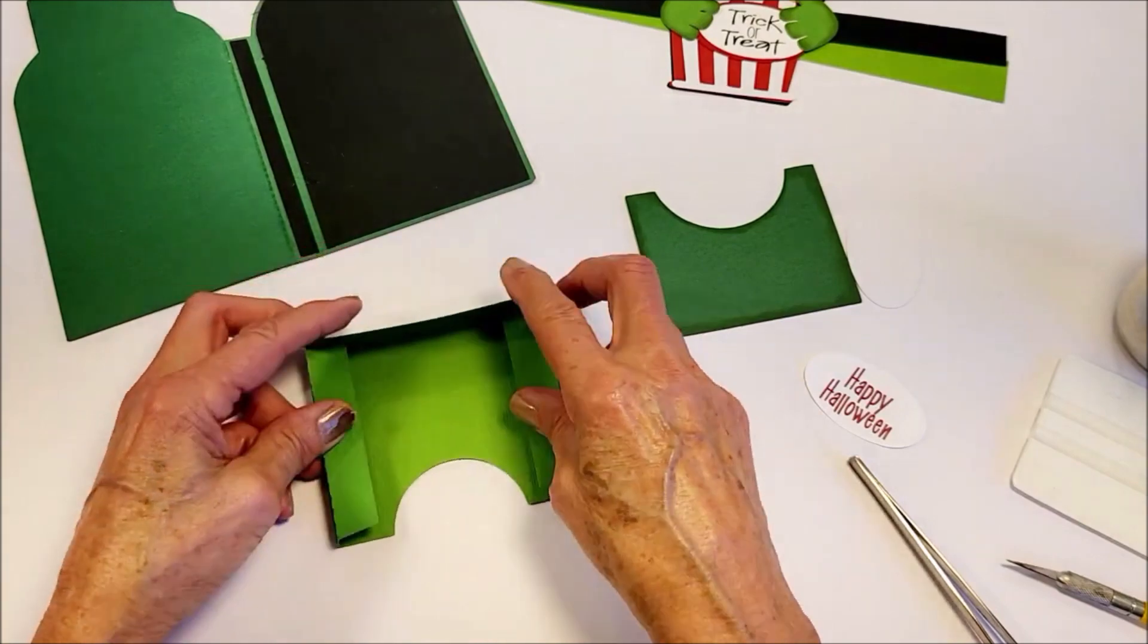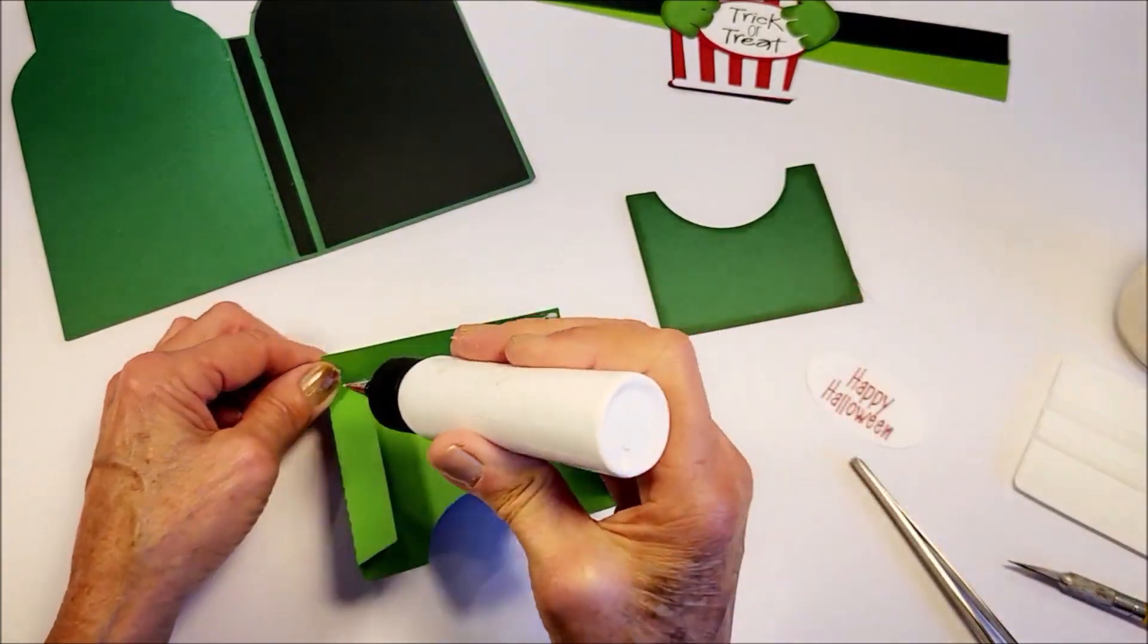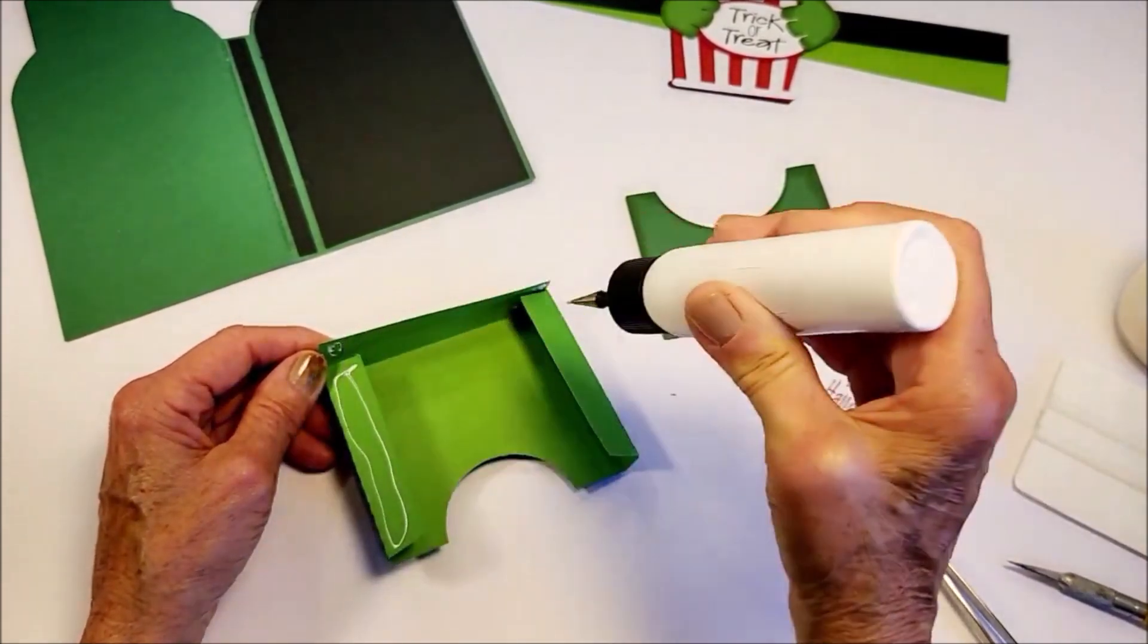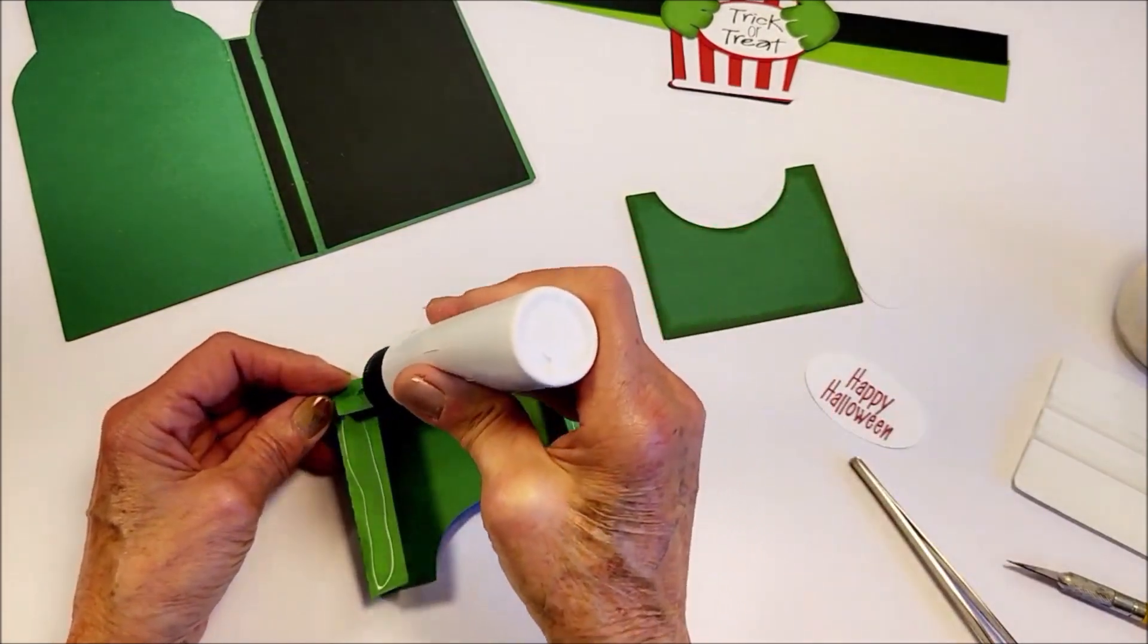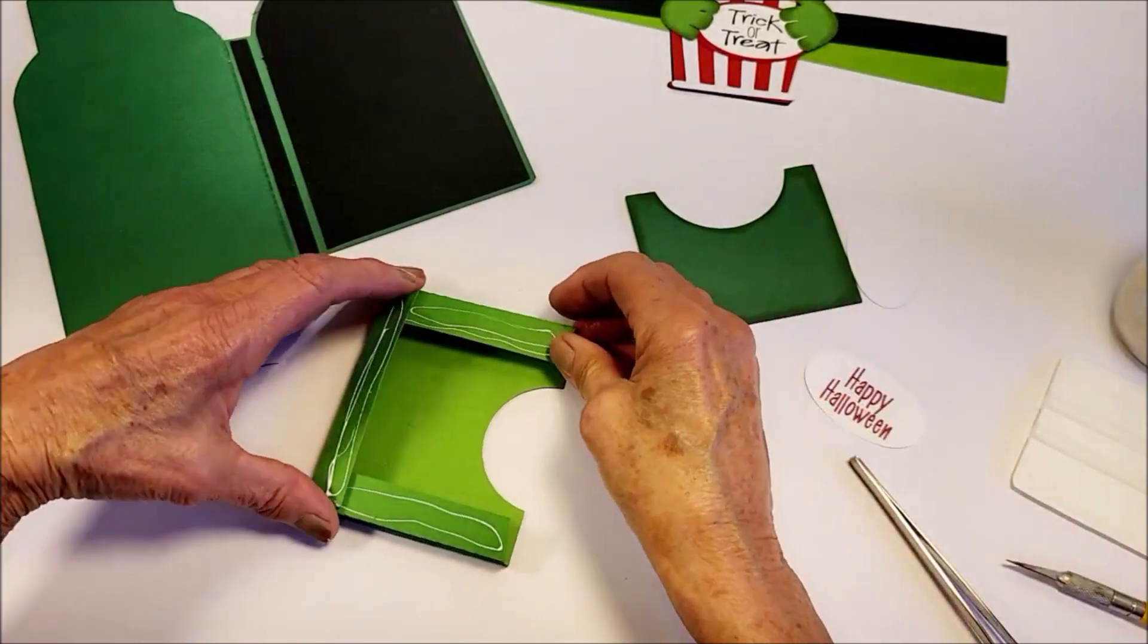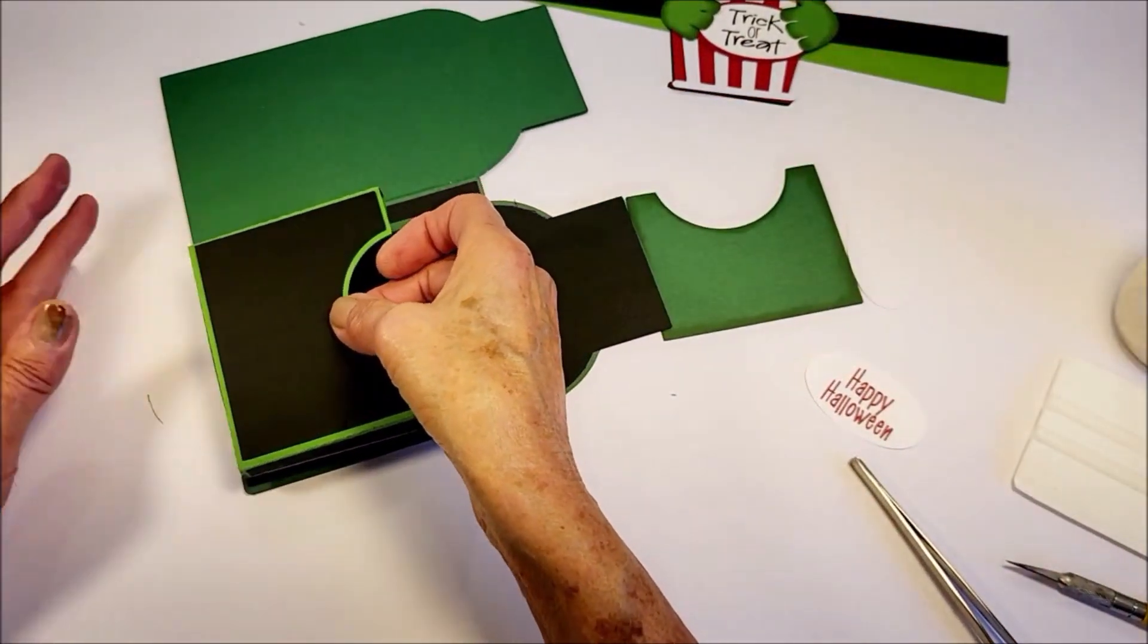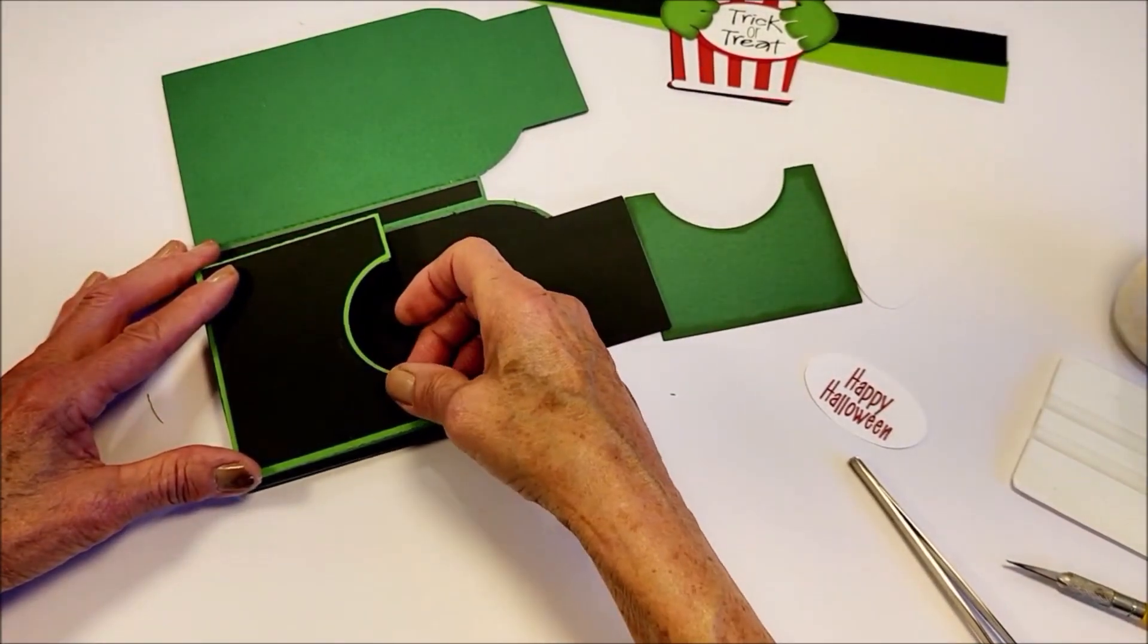And then I fold these down and I'm going to put a little bit of glue right here. And then I'll slide it all along there and there. And then I'm going to slip it on here and I'm going to line it up right on the bottom and on the outer edge.